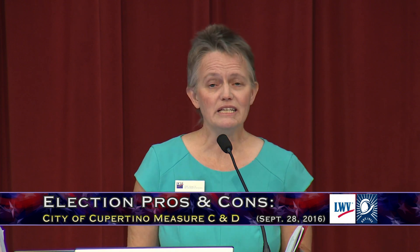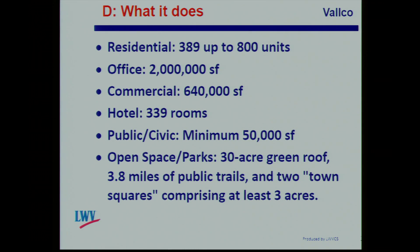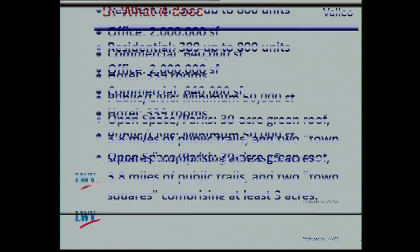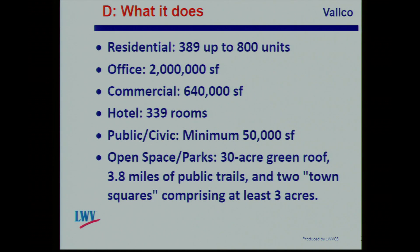Measure D would establish permitted land uses for the Valco area, including 389 units of residential — up to approximately 800 if there is a conditional use permit — 2 million square feet of office space with a minimum of 100,000 square feet for incubator, co-work, or multi-tenant space; 640,000 square feet of commercial with a minimum of 600,000 square feet of retail, entertainment, and personal services; 339 hotel rooms, 148 of which have already been approved by the city; minimum of 50,000 square feet of public or civic space; and open space including a 30-acre green roof accessible to the public with at least 3.8 miles of public trails and two town squares comprising at least three acres.